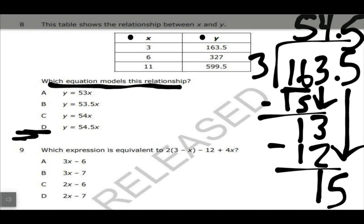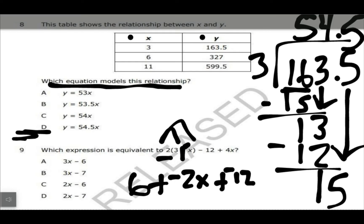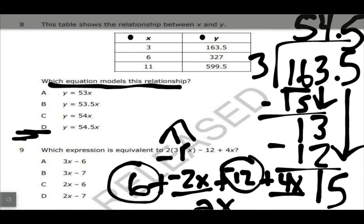And then the next one is another expression. This one we need to do distributive property first. So 2 times 3 is 6, and then don't forget, if I do add the opposite, that is a negative X, so 2 times negative X is negative 2X. And then plus negative 12, because I'm going to do add the opposite with that plus 4X. So I want to get my X's and my numbers together. So I have my X's are negative 2 and 4, which makes 2X. And then I got positive 6 and negative 12, which makes a negative 6 or minus 6. So it would be 2X minus 6, so that would be C.